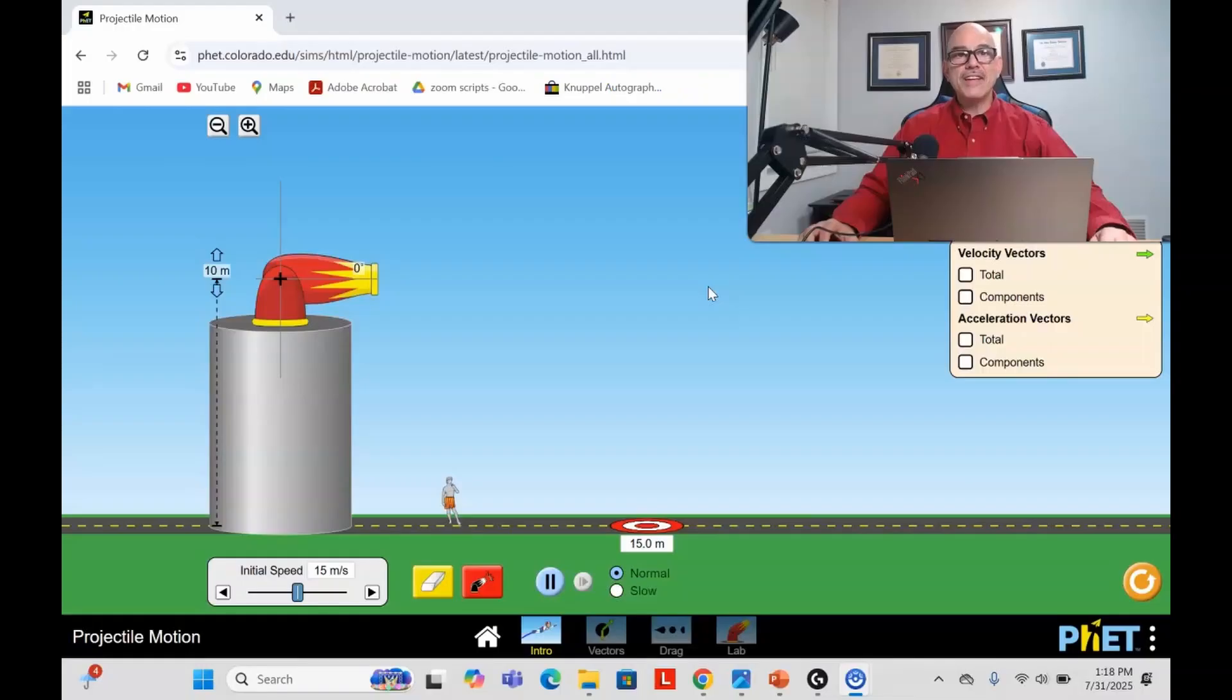In this Colorado PhET projectile applet, I'll set this angle to 30 degrees. We'll have the speed of the cannonball when it leaves the cannon be 15 meters per second, and the trajectory of this cannonball is known even before the cannonball leaves the cannon. That is classical mechanics in a nutshell.